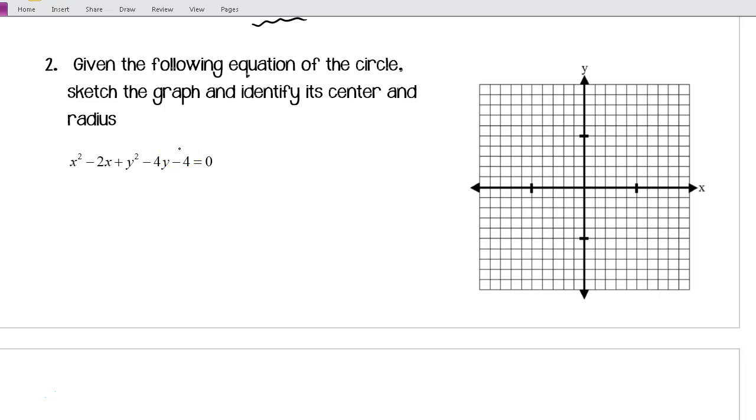So, to put this in the standard form, we're going to have to complete the square for the x's and for the y's. So, for my x's, this is how I like to complete the square. I'm going to have x² - 2x plus something that's going to go over here plus y² - 4y plus something that's going to go over here to complete the square.